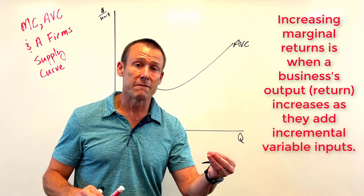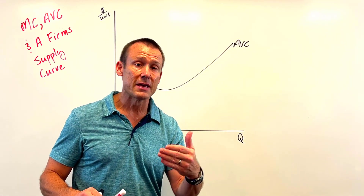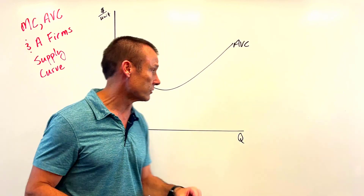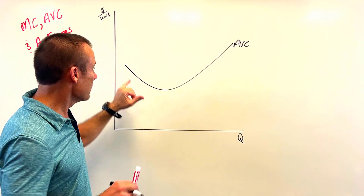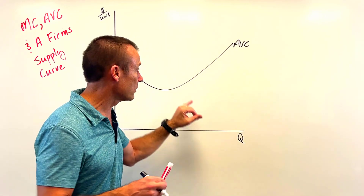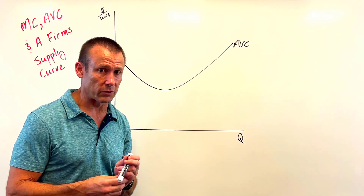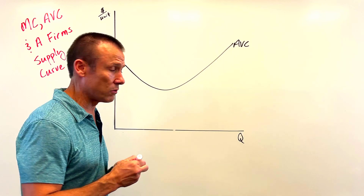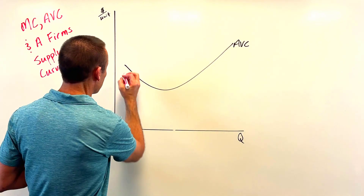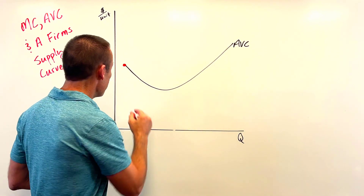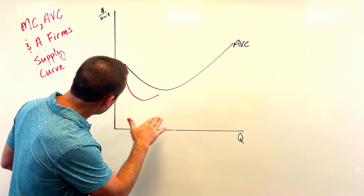Eventually they get constant marginal returns and then diminishing or decreasing marginal returns. So the reason AVC goes down for a while is we're getting increasing marginal returns, and then it goes up due to decreasing marginal returns. Now let's add in the marginal cost curve. If my average is going down, my marginal cost must be below it. At the very first unit the marginal and average are the same.